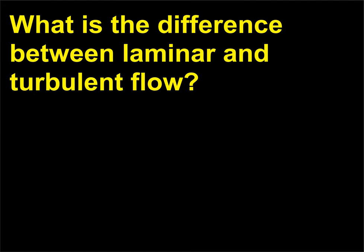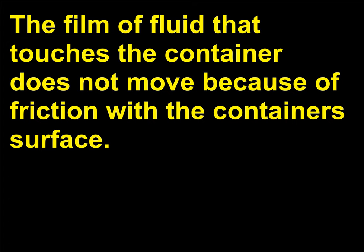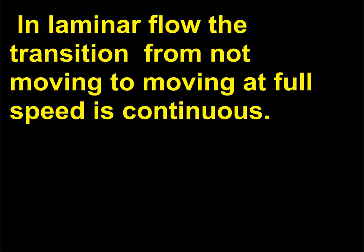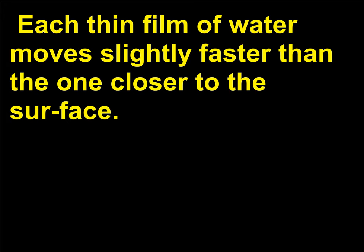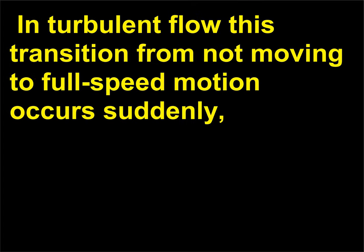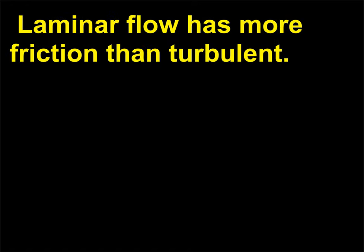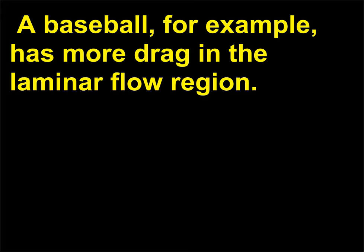What is the difference between laminar and turbulent flow? The film of fluid that touches the container does not move because of friction with the container's surface, but the fluid in the middle of the stream does. In laminar flow the transition from not moving to moving at full speed is continuous — each thin film of water moves slightly faster than the one closer to the surface. In turbulent flow this transition from not moving to full speed occurs suddenly, and the water moves in tiny circles in this region. Laminar flow has more friction than turbulent flow. A baseball, for example, has more drag in the laminar flow region.